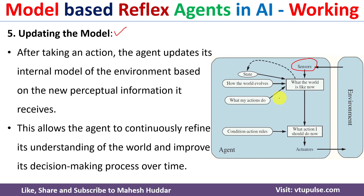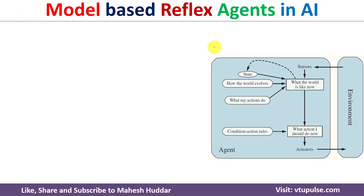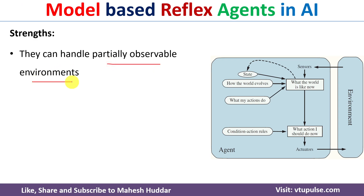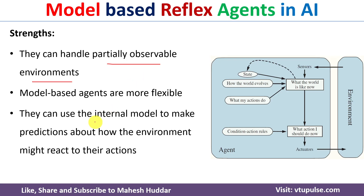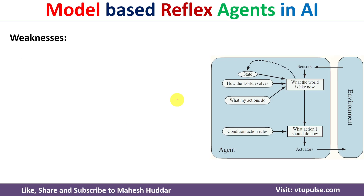The strengths of model-based reflex agent include the ability to handle partially observable environments. In simple reflex agent, the environment must be fully observable, but model-based reflex agent works with both partially and fully observable environments. Model-based agents are more flexible because they maintain an internal model — they do not depend only on condition-action rules, but also track how the environment evolves, what actions were taken, and how the environment changed as a result.